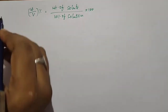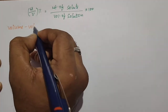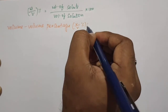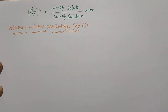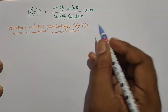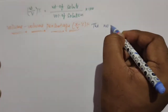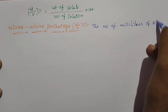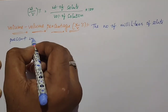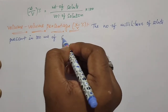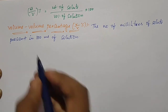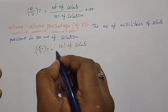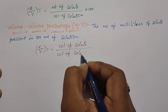Next is volume-volume percentage, represented by v/V. Volume-volume percentage means the number of milliliters of solute present in 100 mL of solution is called volume-volume percentage. The formula: v/V = (volume of solute / volume of solution) × 100.